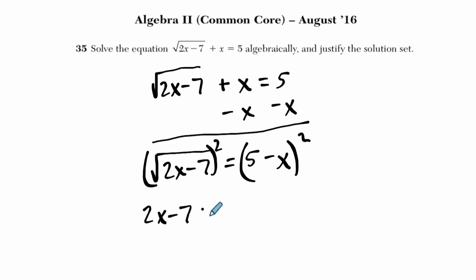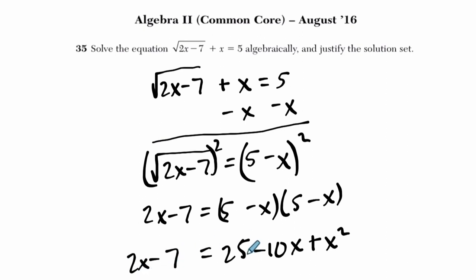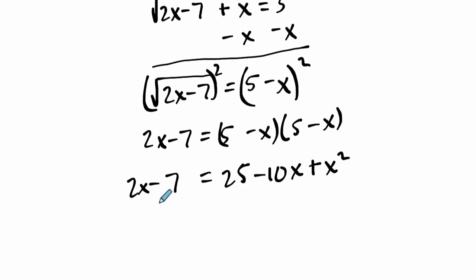So we get 2x minus 7. Now, 5 minus x squared, we're going to have to distribute. Okay, and we get 25 minus 5x minus 5x is minus 10x plus x squared, and that equals 2x minus 7. And now, we go a little bit further. I'm going to subtract 2x on both sides and add 7. Do that all at once. Add 7, subtract 2x, add 7, subtract 2x on both sides of my equation. This cancels to 0,